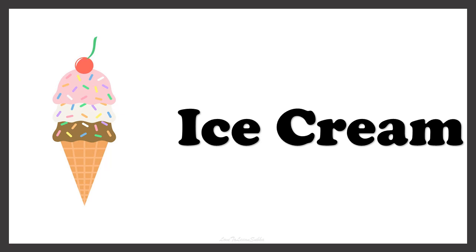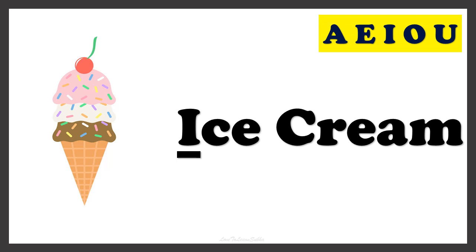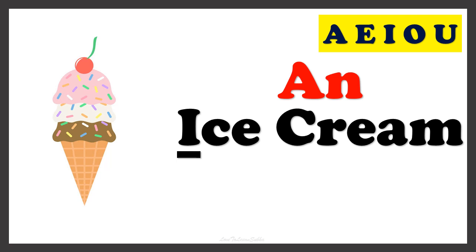Now guess the name of this picture. Yes, this is ice cream. To find the article to be placed in front of the word ice cream, you have to check the first letter of the word. Ice cream has the first letter I, which is a vowel. So whenever a word starts with a vowel, we use the article AN. So we call it an ice cream.